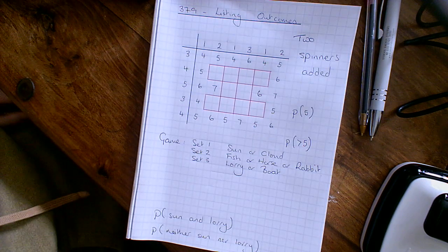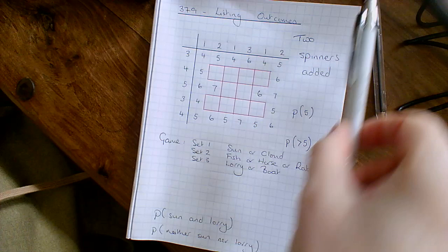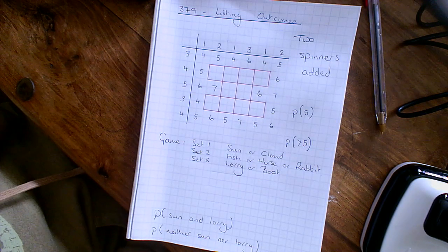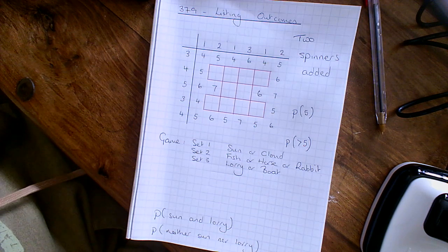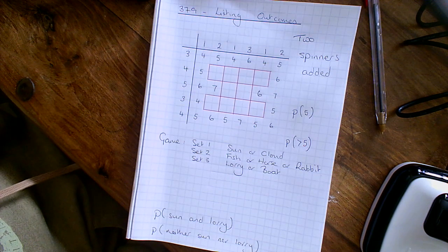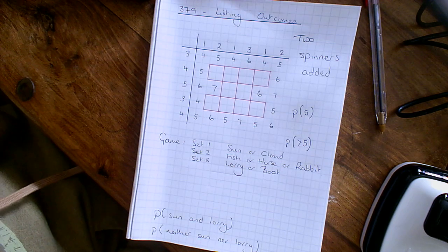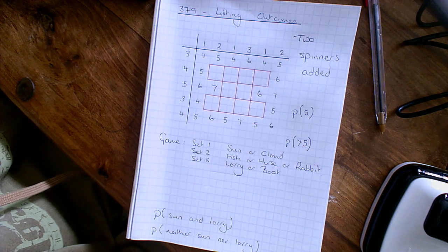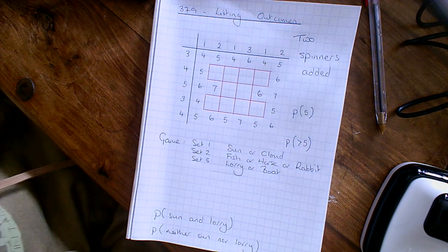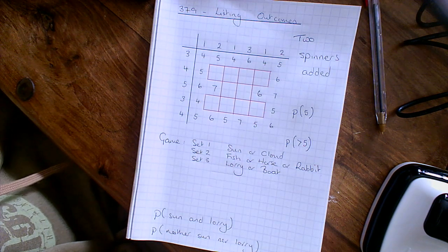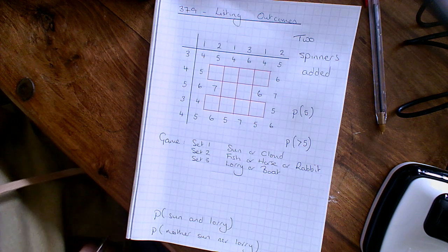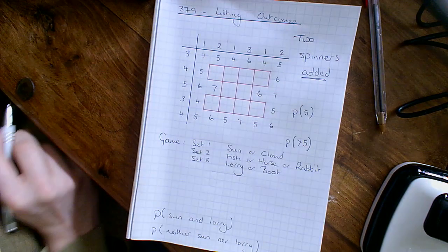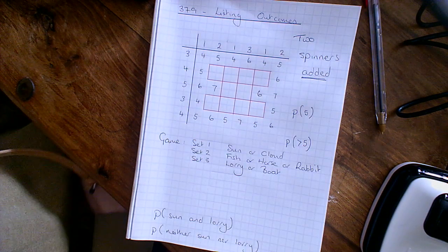Hello and welcome everybody to listing outcomes on MyMaths — a walkthrough. I'm going to work through this listing outcomes question that was assigned to the class. First of all, read the question carefully and then fill in the table. The question said there were two spinners which were spun and the results were added together, so I need to keep that in mind to fill in the table.